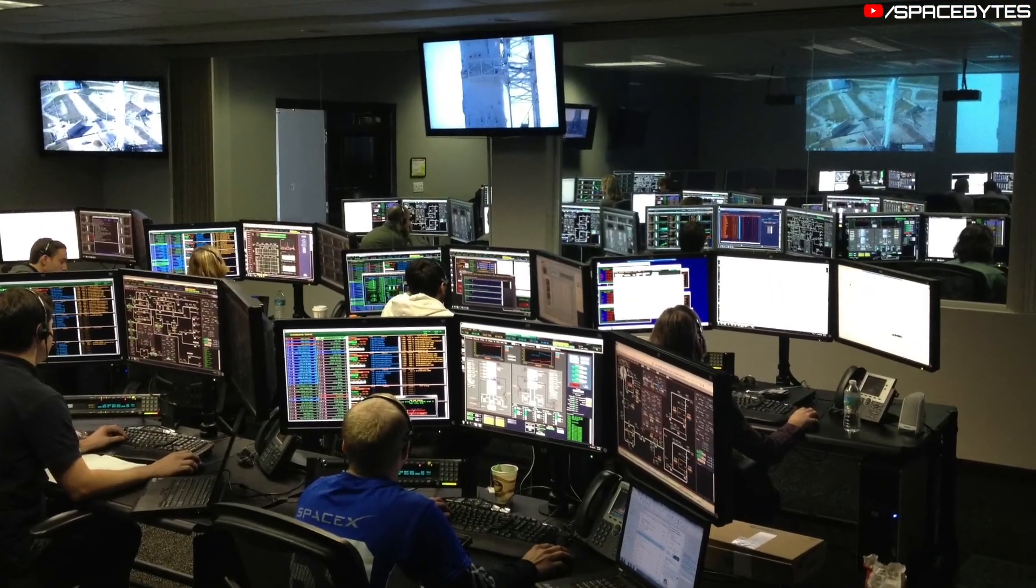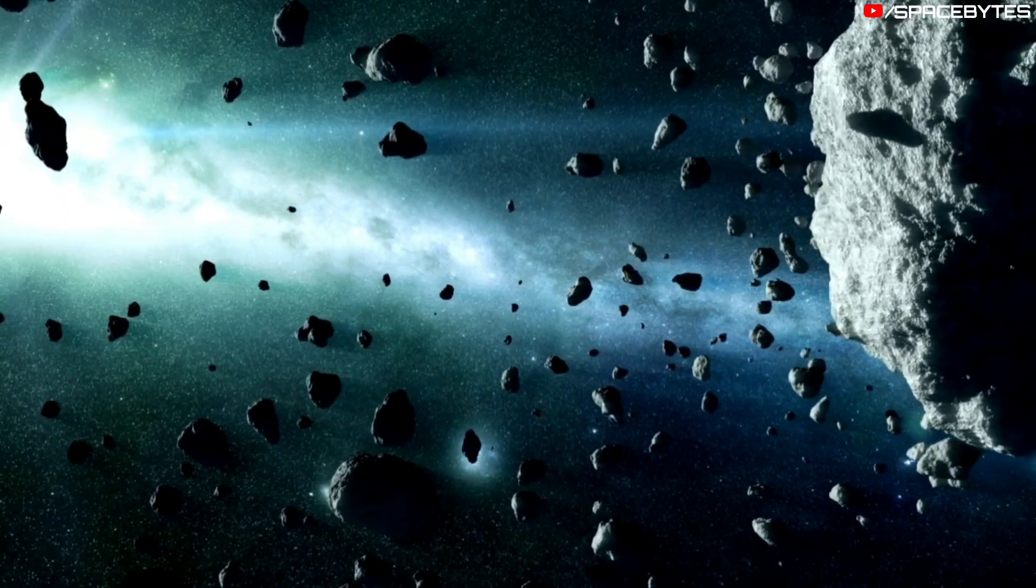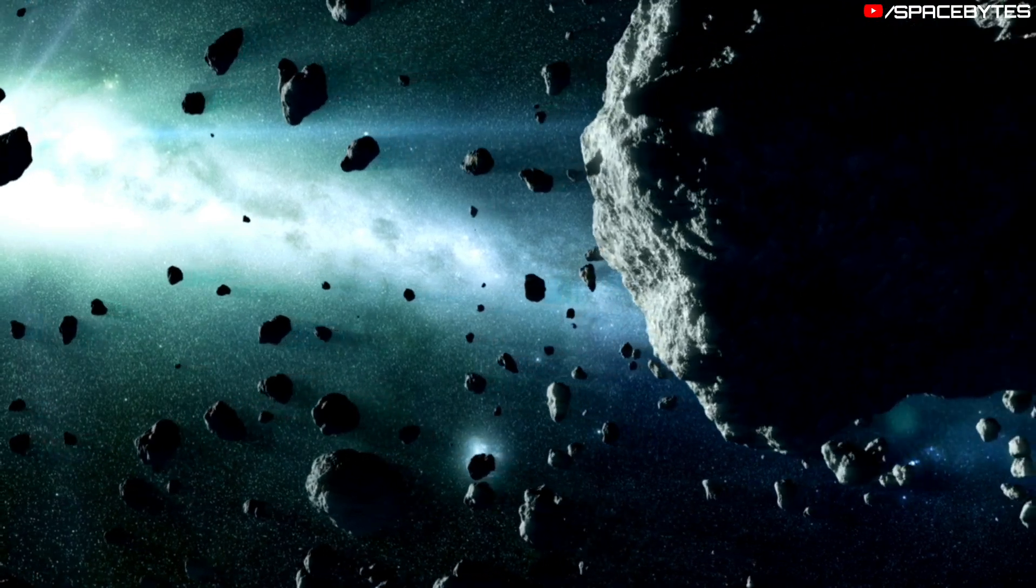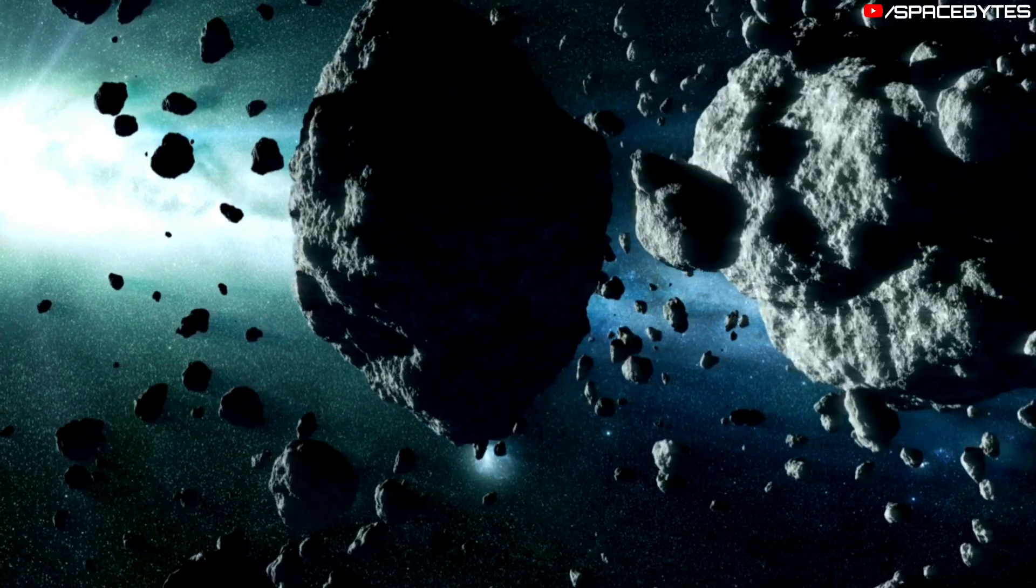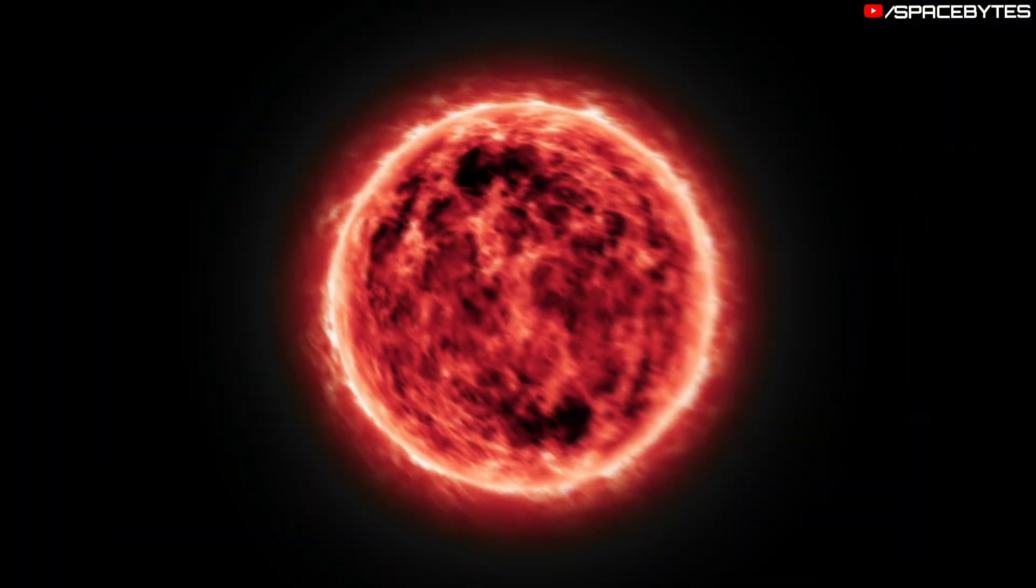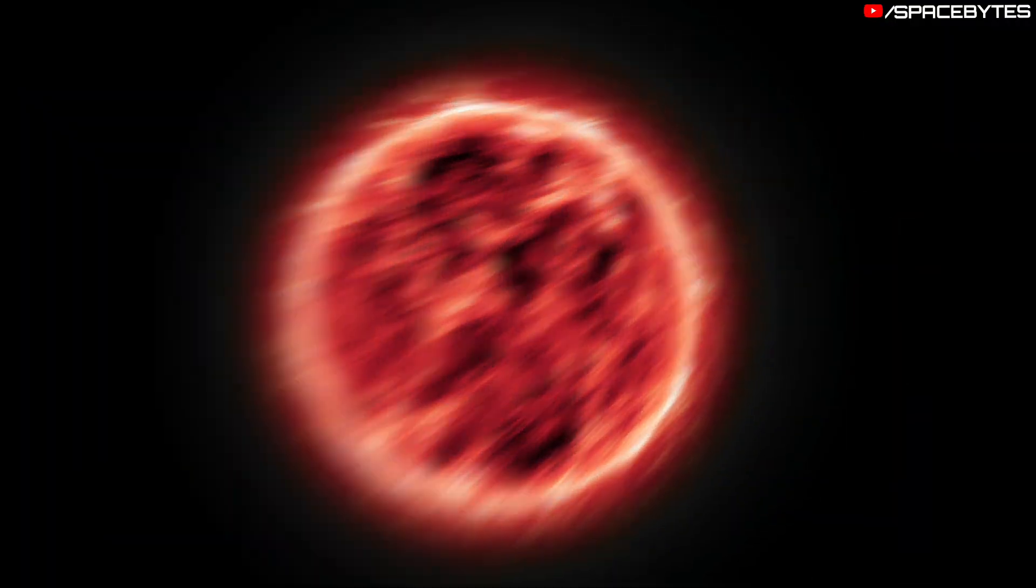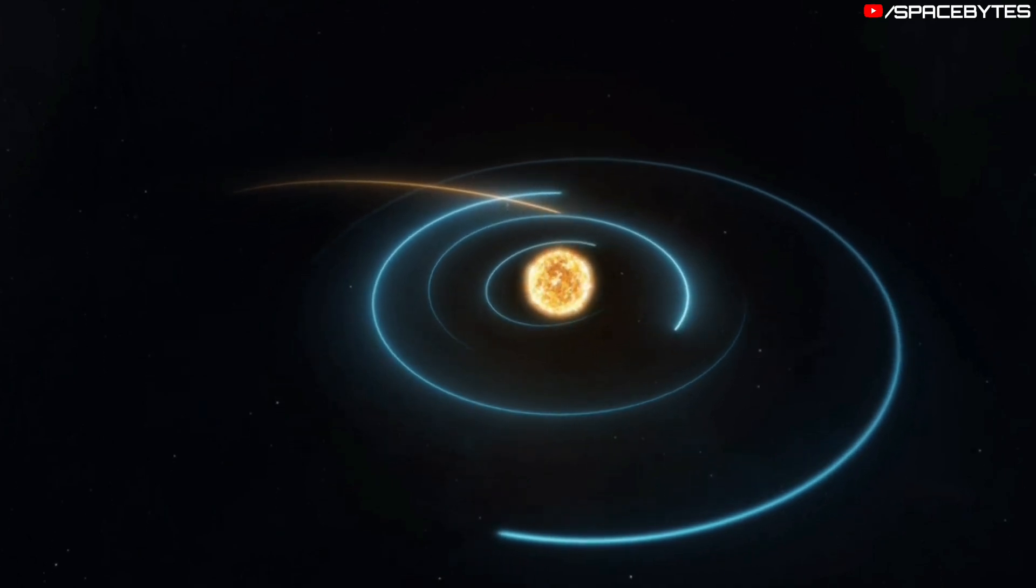According to NASA, near-Earth objects, NEO, are asteroids and comets with orbits that bring them to within 120 million miles, 195 million kilometers, of the Sun, which means they can circulate through Earth's orbital neighborhood.